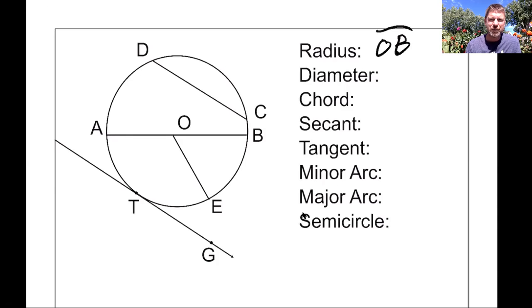I'm going to jump to chord. A chord is just any segment that connects two points on a circle. So there's a point, there's a point. CD would be a chord. On the circle, AB is also a chord. It connects an endpoint to an endpoint.